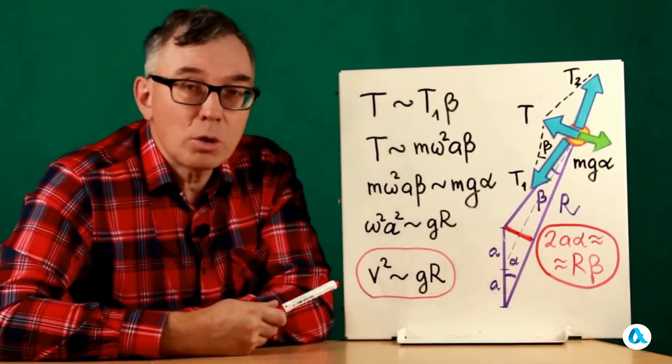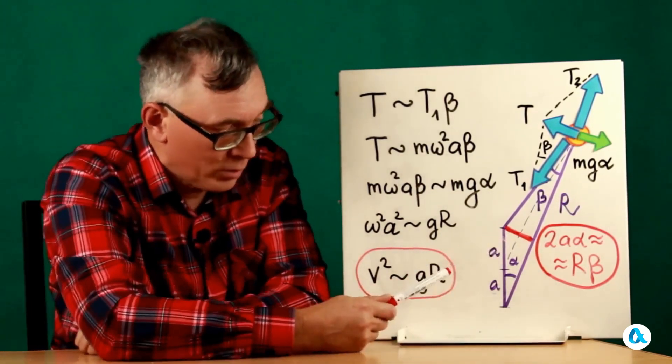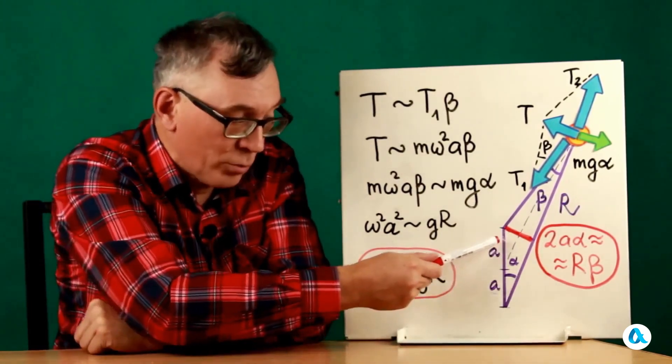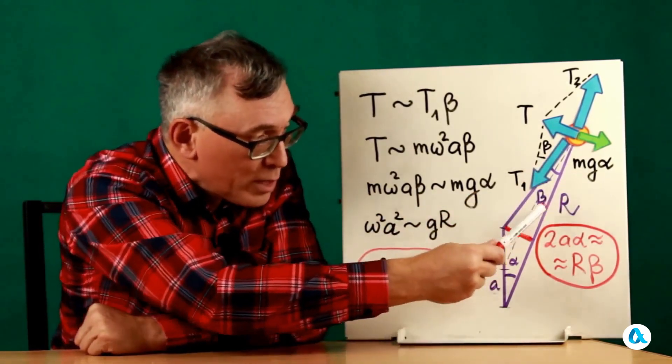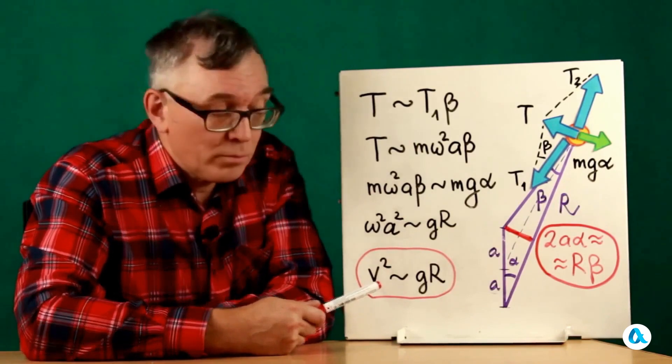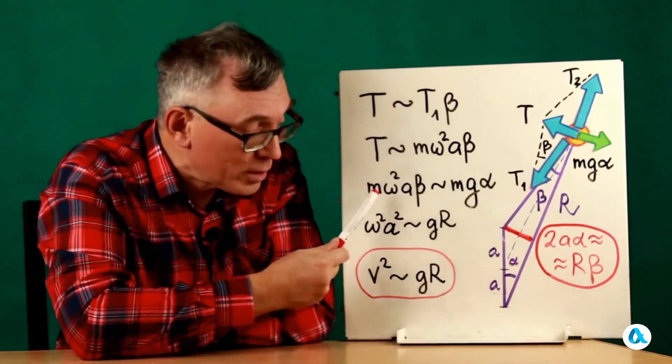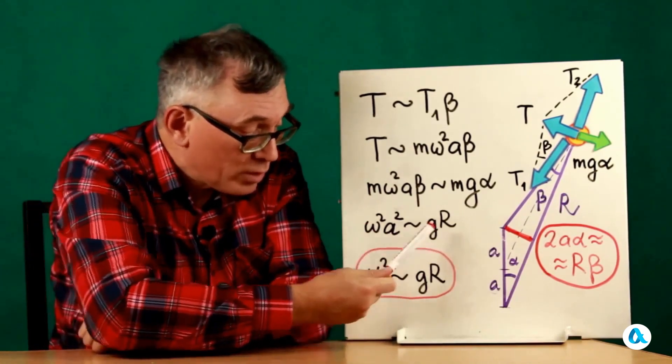The conditions of equilibrium can be written like this: restoring force versus deviating force. Now we need to use geometric considerations. This red side of the triangle is equal to 2a multiplied by α on one side, and on the other side from this triangle, R multiplied by β, where R is the length of the pendulum.